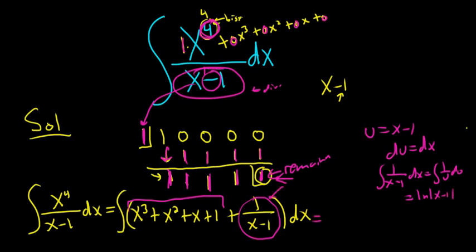So this is equal to, let's see, using the power rule on these guys. So x to the 4 over 4 plus x to the 3 over 3 plus x squared over 2, adding 1. And then integrating 1, you get x. And then you get the natural log of the absolute value of x minus 1. And you have your plus c.